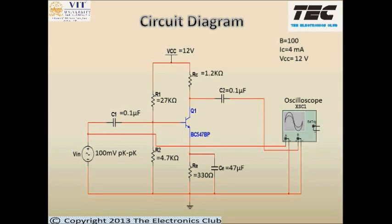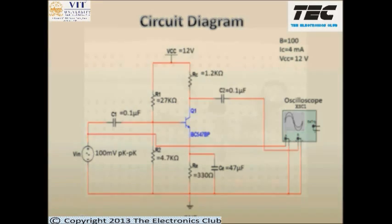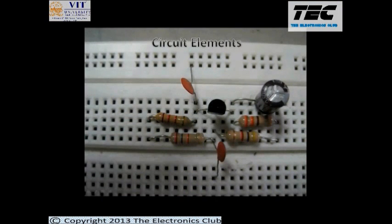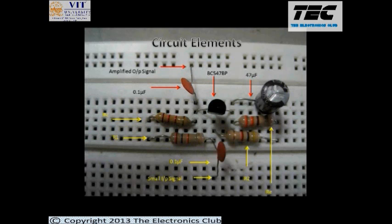In the oscilloscope connection, the positive terminals are connected as given in the circuit diagram while all the negative terminals are grounded. Now we will have a look at all the circuit elements being used in our CE amplifier: a 0.1 microfarad ceramic capacitor, BC547 BP transistor, 47 microfarad electrolytic capacitor, RC resistor, R1 resistor, 0.1 microfarad ceramic capacitor, R2 resistor, and RE resistor. This is the point from where a small input signal is taken and this is the point from where our amplified output signal is derived.